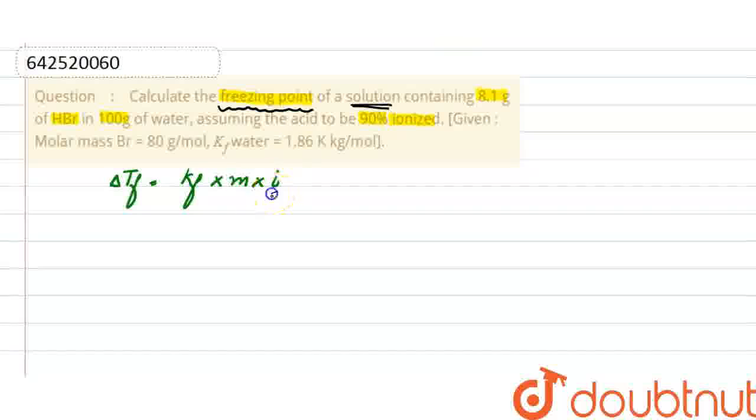First, we will find the Van't Hoff factor. In the given question, alpha is 90%, meaning 90% of the acid is ionized, so alpha = 90/100 = 0.9. As we know, i = 1 + α(n - 1).